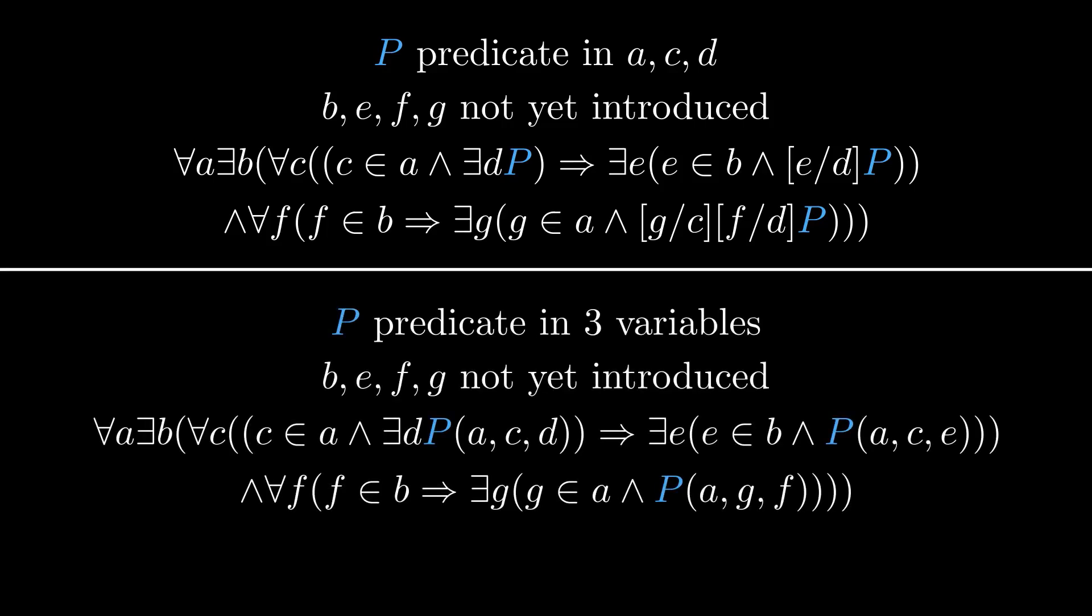Whereas it's not immediately clear that the substitution of e for d in the predicate P in this case means that the shrio a, c, e has the property P, this is a lot clearer with the alternate notation, where we literally write P of a, c, and e. Both notations have their advantages and disadvantages, and I will be using both in these videos.